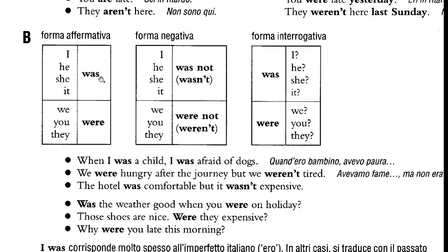The positive form is: I was, he was, she was, it was. As you can see, first person singular or third person singular becomes 'was'. The negative form is: I was not or wasn't, he was not / wasn't, she was not / she wasn't, it was not / it wasn't. For the interrogative form, you have: was I, was he, was she, was it — the order is different because in a question you put the verb first and then the subject.